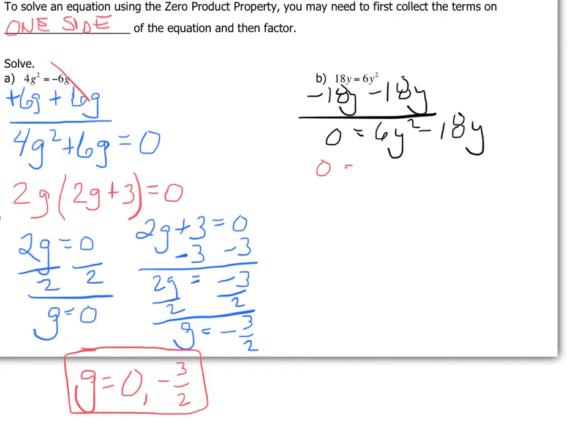Well 18 and 6 both have a 6 in them. Y's and y² have a y in them. 6y² divided by 6y is y. 18y divided by 6y is 3. And remember it's negative 18y, so it's a negative 3.